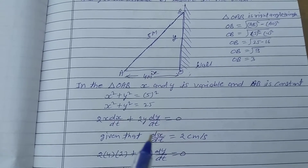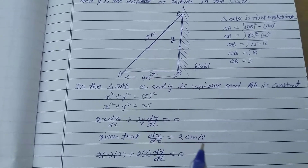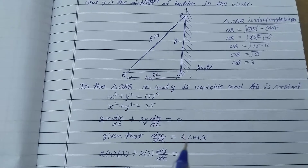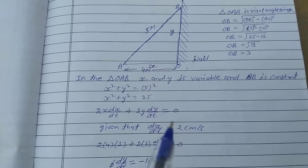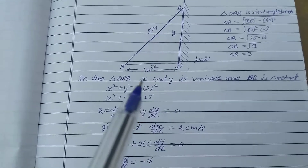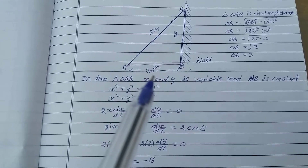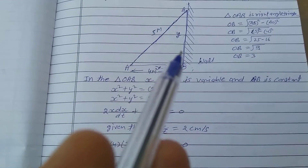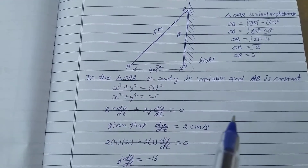Given that dx/dt = 2 cm per second. Also, the condition given is x = 4 meters and y = 3 meters, as found before.